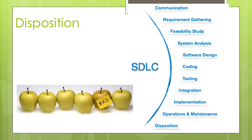The final phase is disposition. As time passes, the software may decline in performance, may become completely obsolete, or may need intense upgrades. A pressing need to eliminate a major portion of the system arises. This phase includes archiving data and required software components, closing down the system, planning disposition activities, and terminating the system at the appropriate end of its lifecycle.